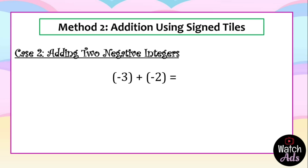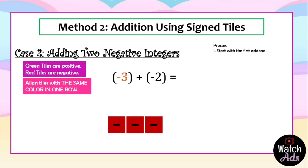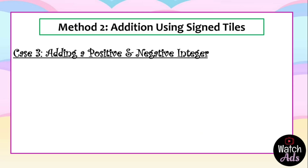For our second case, we add two negative integers: negative three plus negative two. Green tiles are positive and red tiles are negative. We start with the first addend, negative three — it is negative so we use red tiles. We put three red tiles and align same-color tiles in one row. We then add the second addend, negative two: two more red tiles. We count all the tiles — five red tiles. The answer is negative five.